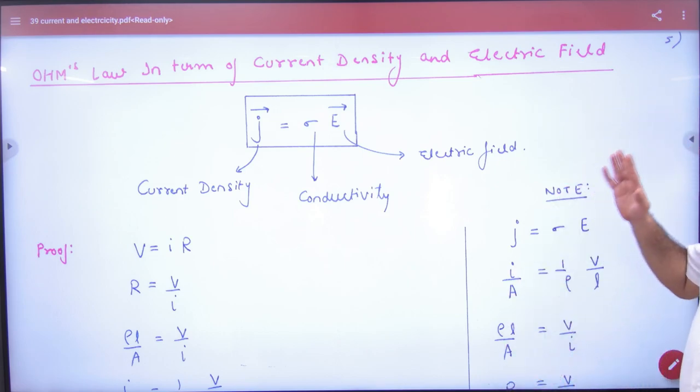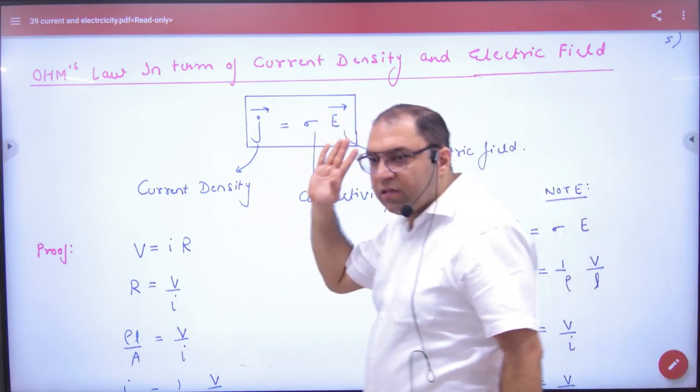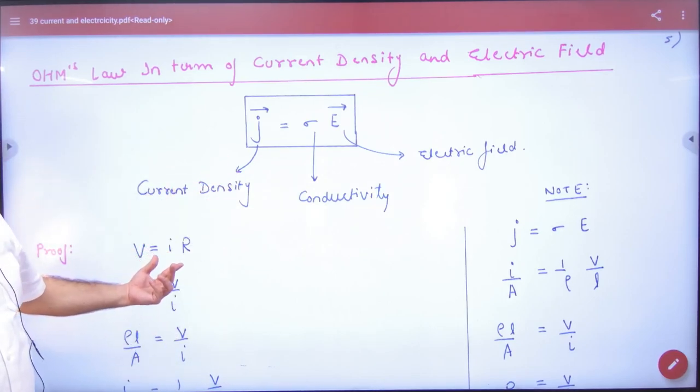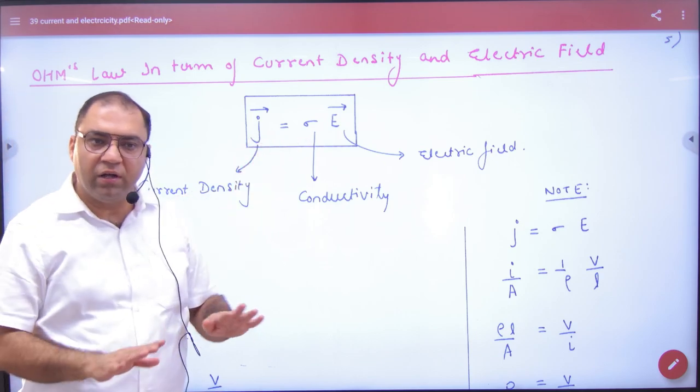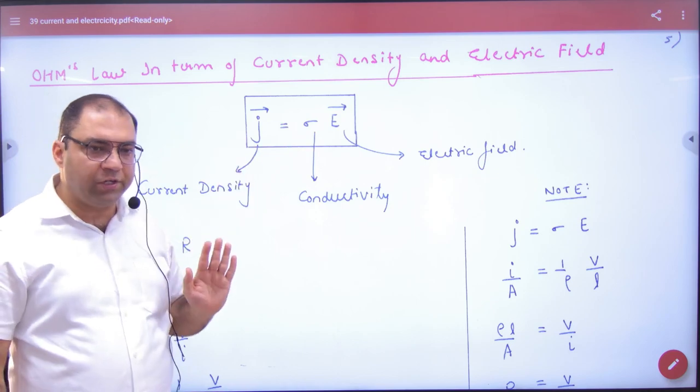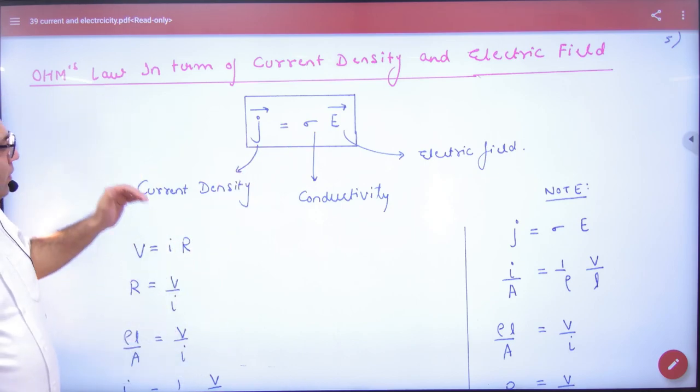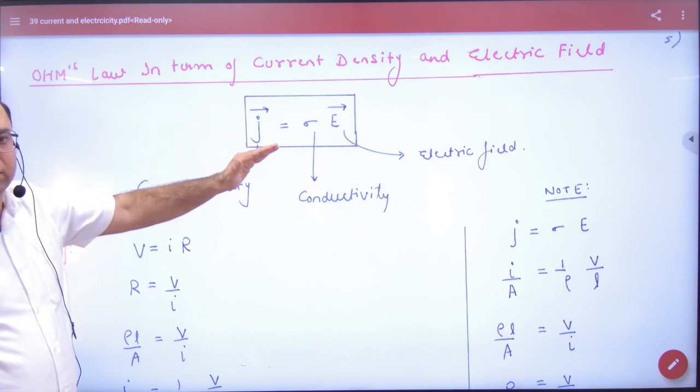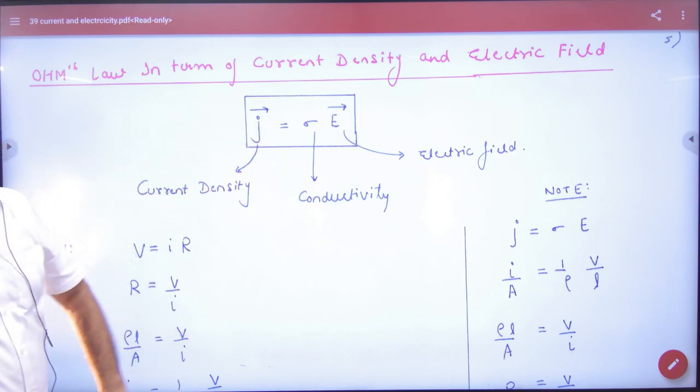Clear here? J is equal to sigma into E. This formula is Ohm's law. You say Ohm's law? Ohm's law is V is equal to IR. This and this is not a difference, it is the same. J equals sigma into E. So this will come to prove Ohm's law in terms of electric field and current density. Start here.